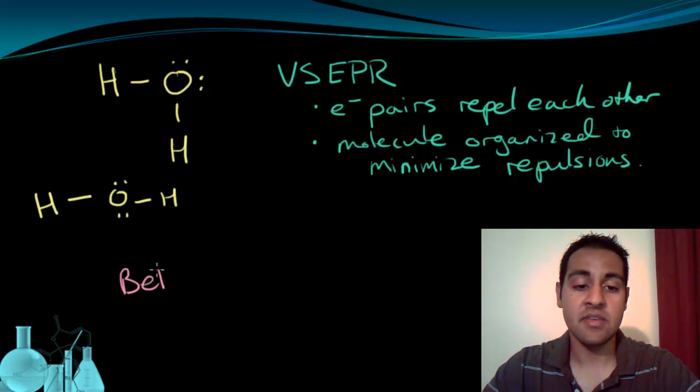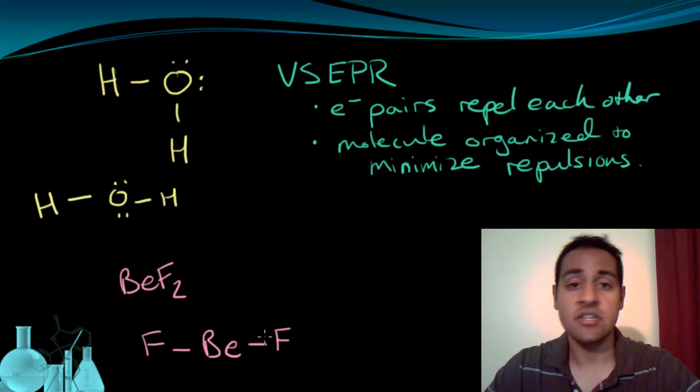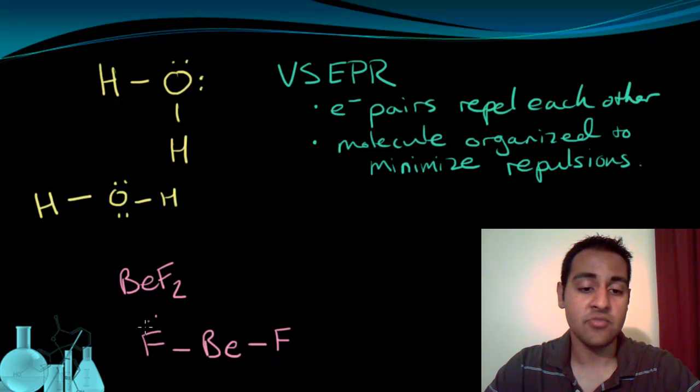So beryllium fluoride is BeF2. There's only going to be one possible Lewis structure for beryllium fluoride, and it's going to be beryllium as a central atom with bonds going out to the fluorine atoms. And of course, each fluorine should have the non-bonding pairs written in as well, so I'll put those in very quickly. There we go. So here's our Lewis structure for beryllium fluoride. According to this Lewis structure, these atoms are in a line, so it would be linear in the arrangement.